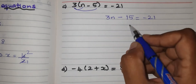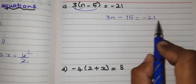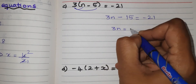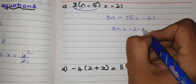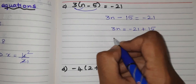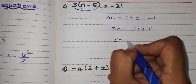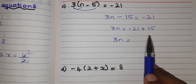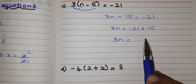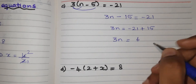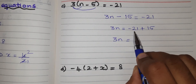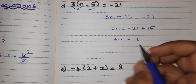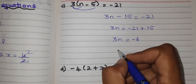Using the transposing method, when minus 15 goes to the RHS side, it will become plus 15. So 3n equal to minus 21 plus 15. Minus into plus gives minus, so 21 minus 15 gives 6. The biggest number is 21, and the sign in front of the biggest number is minus, so put minus — giving minus 6.